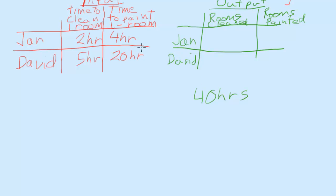So if you have 40 hours, Jan can clean a room in 2 hours. 40 divided by 2, she could clean 20 rooms. On the other side, David takes 5 hours per room. 40 divided by 5 should be 8. Looking at painting, 4 hours to paint a room. 40 divided by 4 is 10 rooms could be painted. On this other side, 20 hours per room, obviously 2 rooms.